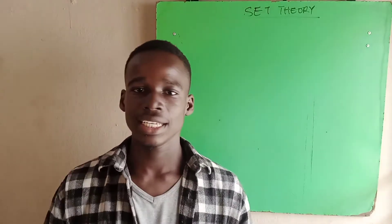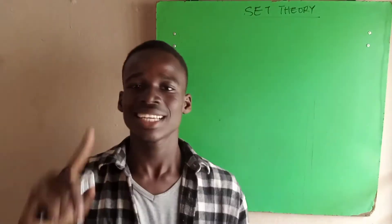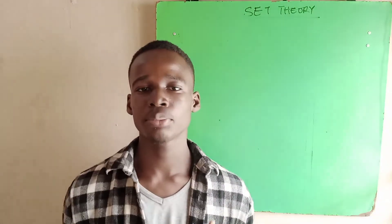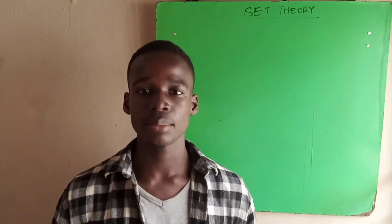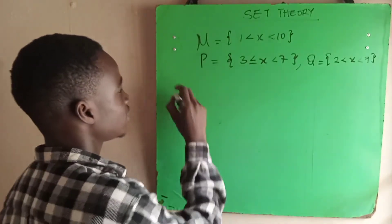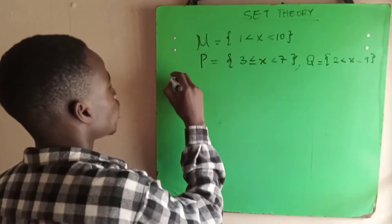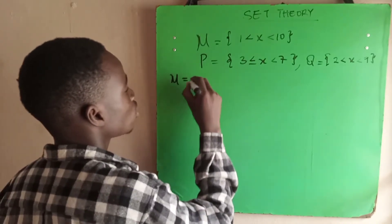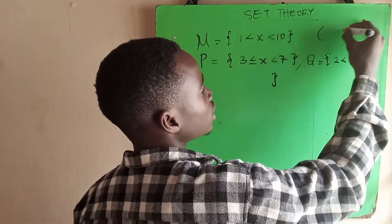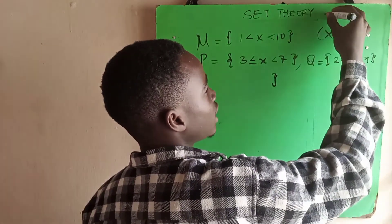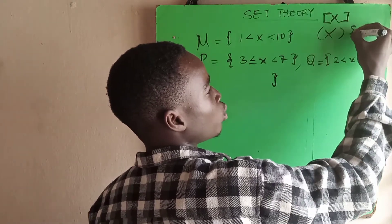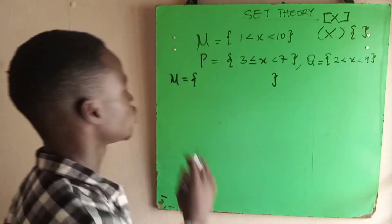We will be asked to find the union, the intersection, power set, the complement or prime of a particular set. We have the universal set to be x is greater than 1, less than 10. So interpreting it, we use a curly bracket in set theory. We do not use this type of bracket or this type. They are not accepted. We only make use of curly brackets.